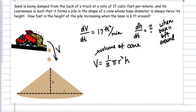Step five is to eliminate variables for which we do not know the rate of change, except for the variable whose rate we're looking for. Looking at the volume formula: we know dV/dt so we keep V; 1/3 and π are constants; but r squared — I don't know anything about r and I'm not looking for it. I need to somehow eliminate r squared from the equation. Let's dedicate a section to that challenge.